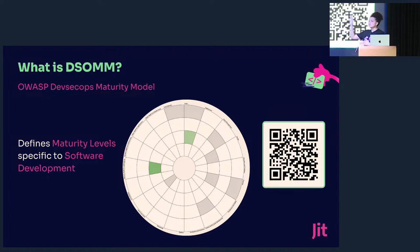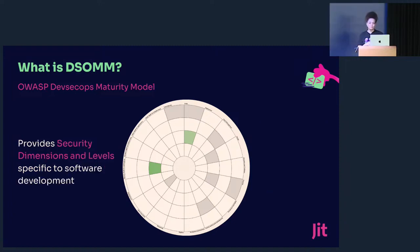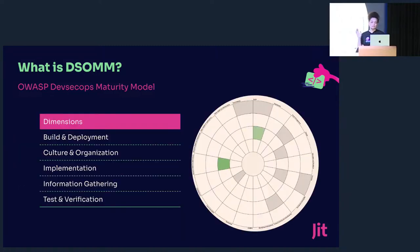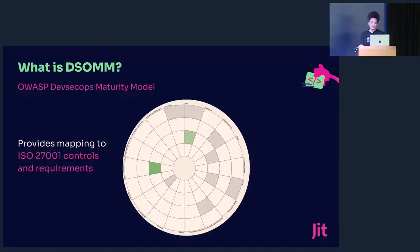This is a view of DSOMM. You can see it's a bullseye shape. This shape, along with the circular pattern, is how DSOMM measures maturity. You can see right away the difference from the waterfall-style CMMI we saw earlier, and all of the layers here are specific to software development. Each of those layers is built by dimensions and sub-dimensions. The dimensions are: build and deployment, culture and organization, implementation, information gathering, and test and verification. One thing worth noting: DSOMM actually provides mapping to ISO controls, so it really helps with compliance — another benefit to using DSOMM.